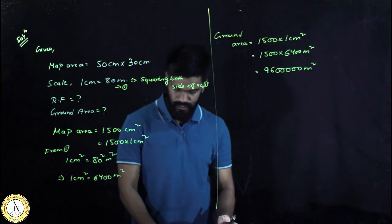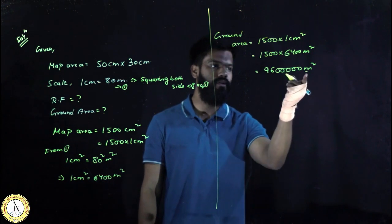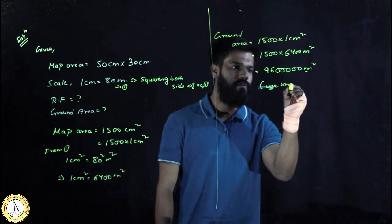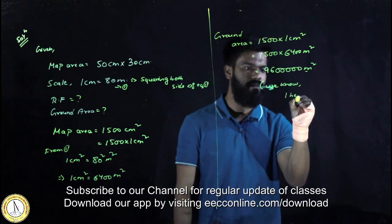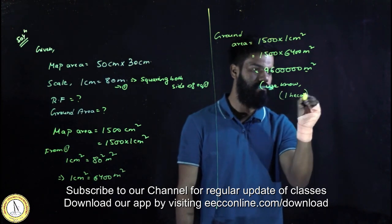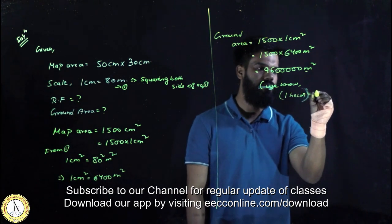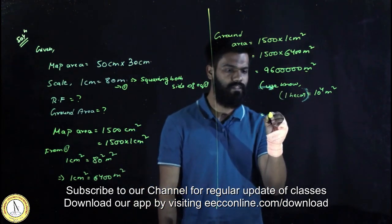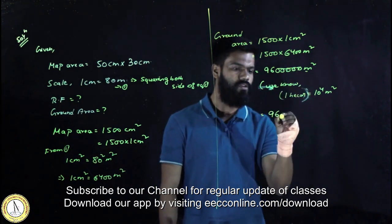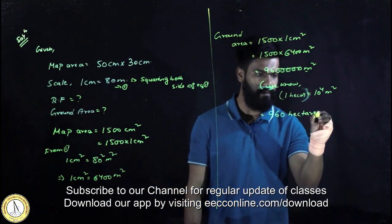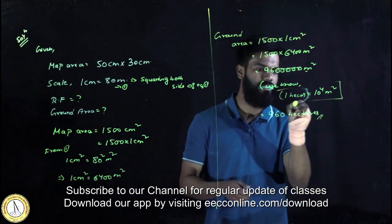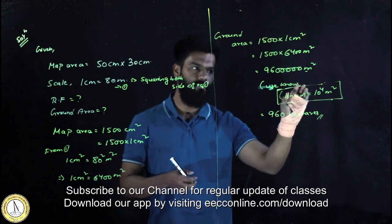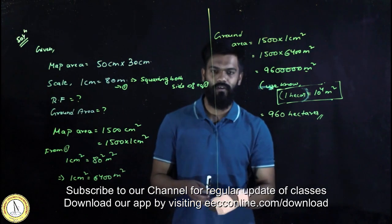Now it is required to find the area in hectares. Now it is in meters squared, so I need to convert this into hectares. We know that 1 hectare is equal to 10 to the power 4 meters squared. So from here I can cancel out 4 zeros. It will be 960 hectares. This will be the answer. This is my ground area in hectares.